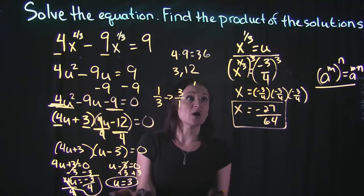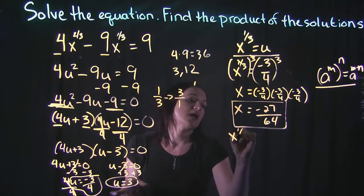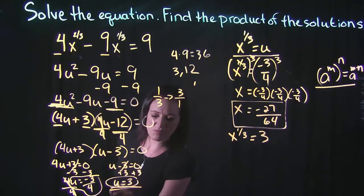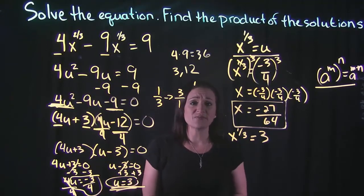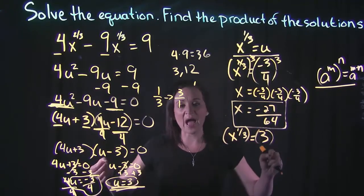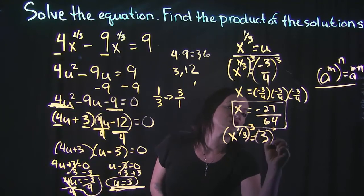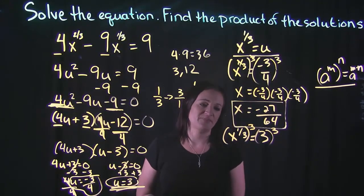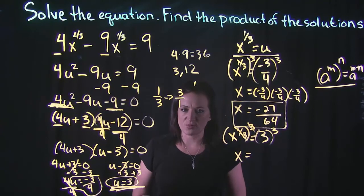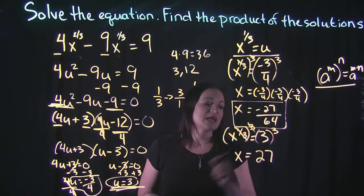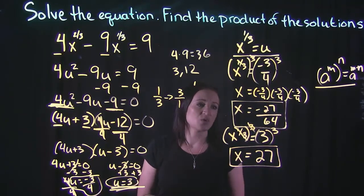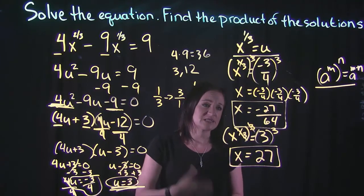For our other u, we take the same formula x to the 1/3 equals u and plug in 3. We do the same thing — raise both sides to the third power to get rid of the 1/3 exponent. 1/3 times 3 cancels to 1, and on the right side, 3 to the third power — 3 times 3 times 3 — equals 27. So our second solution is x equals 27.